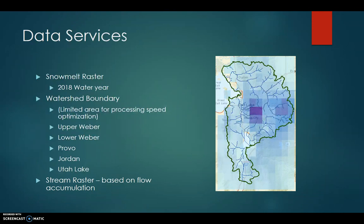This gives you a summary of all the data services we used in our app. We have the snowmelt raster as well as all the watersheds we included. We limited our boundaries to a certain number of watersheds because it makes it run really slow the more watersheds you add. And we have a stream raster on there as well to aid in the watershed delineation.